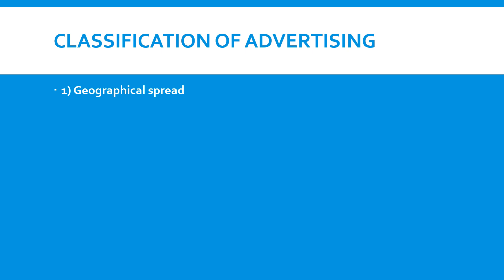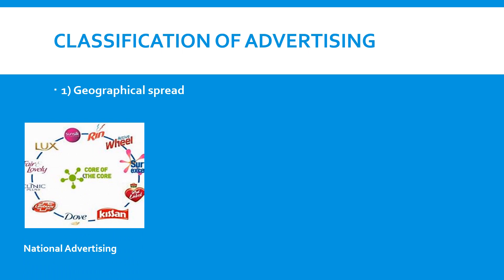Classification of advertising — the first basis is geographical spread. The first type is national advertising. National advertising means the target group is the entire country. The geographical area you are advertising in comes under geographical spread, so national advertising targets the entire country.